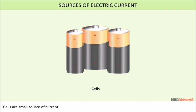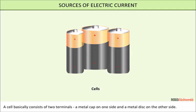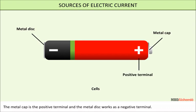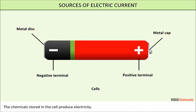Cells are a small source of current. In a cell, chemical energy is converted into electrical energy. A cell basically consists of two terminals — a metal cap on one side and a metal disc on the other side. The metal cap is the positive terminal and the metal disc works as the negative terminal. The chemicals stored in the cell produce electricity.